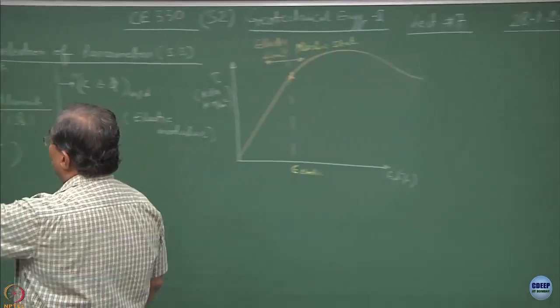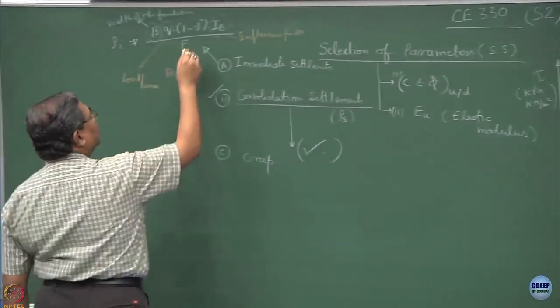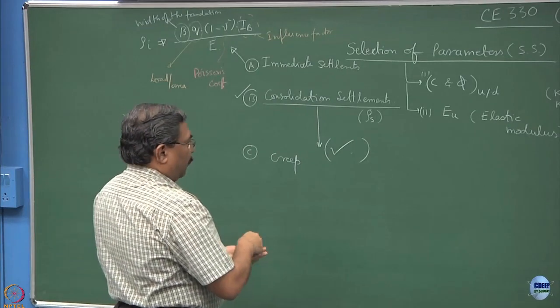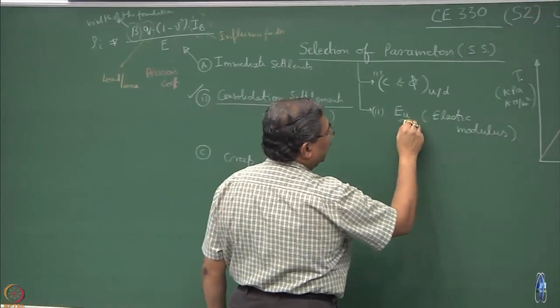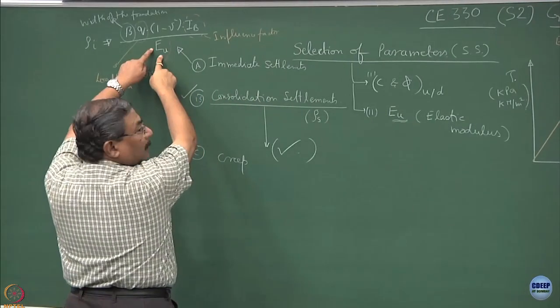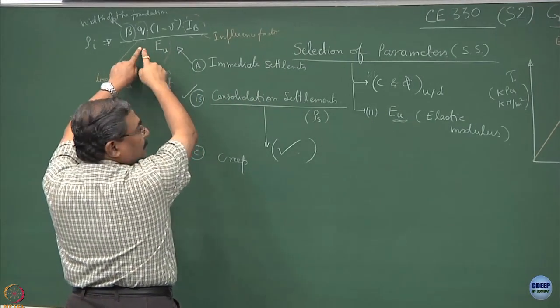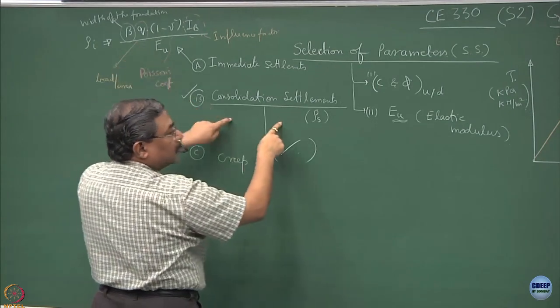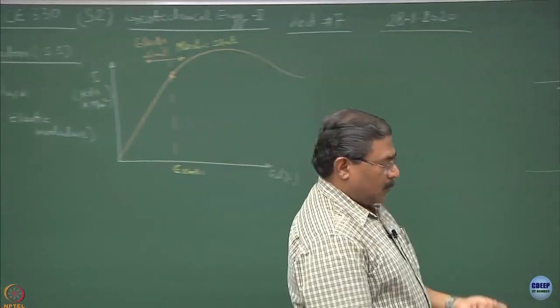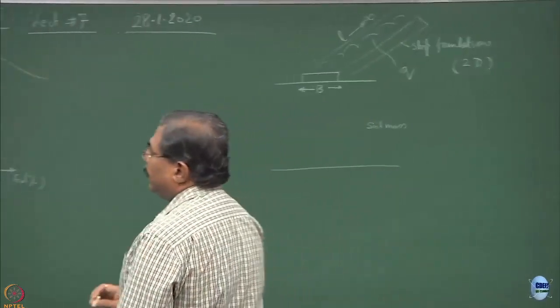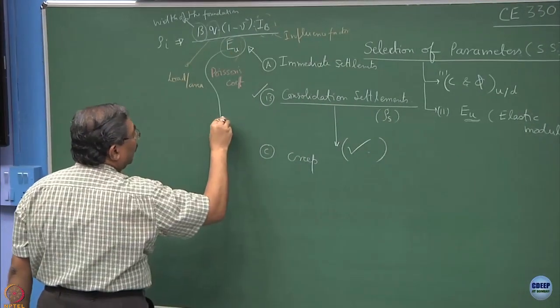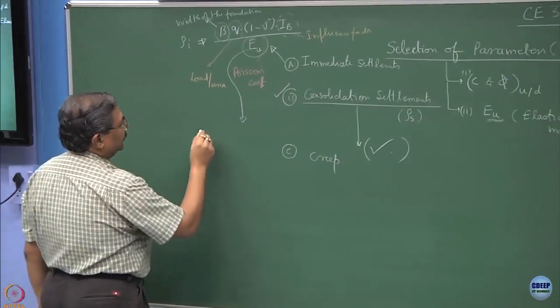The question is, how am I going to obtain the value of E? E is the elastic coefficient or elastic modulus. Why I have written Eu? Because this is under undrained conditions. If drainage starts, immediate settlements are not valid; consolidation settlements take over. The question is, how to obtain Eu value? There are two methods of doing this.